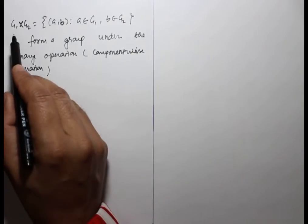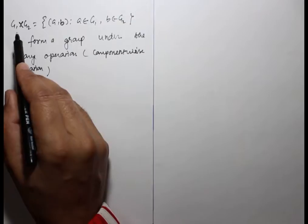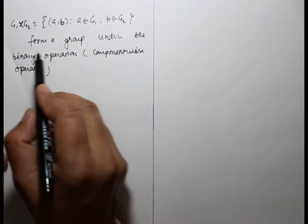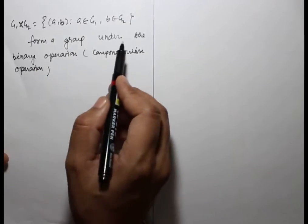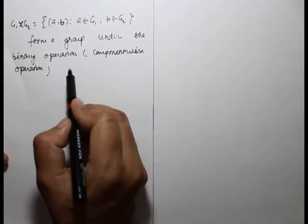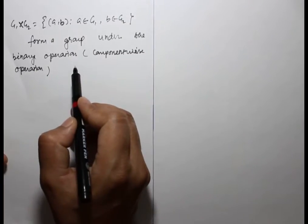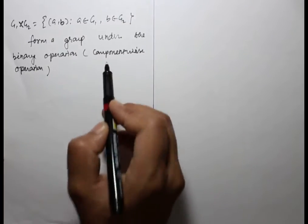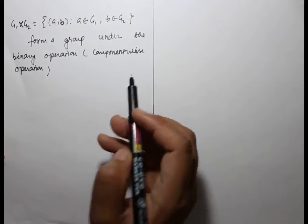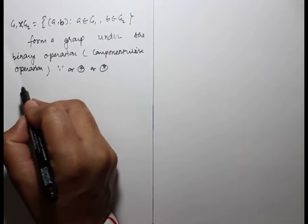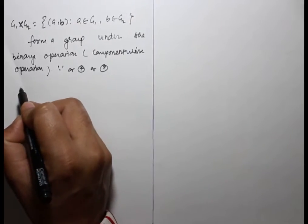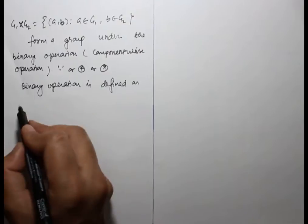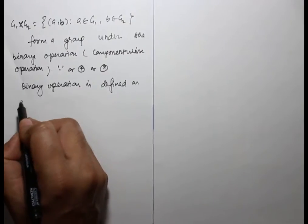This Cartesian product G1 cross G2 forms a group under a binary operation defined component-wise. So the binary operation is defined as component-wise.